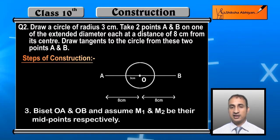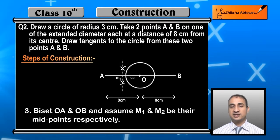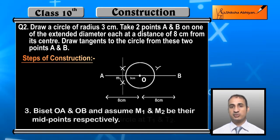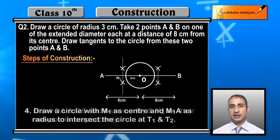Bisect OA — its midpoint is M1. Bisect OB — its midpoint is M2.